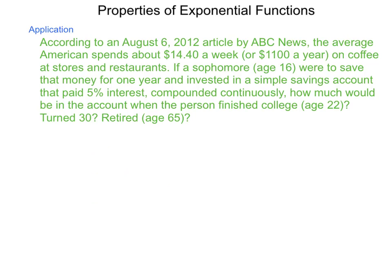If a sophomore, typical age for somebody studying Algebra 2, 16 years old, were to save the money spent on coffee for one year and invested in a simple savings account that paid 5% interest, compounded continuously, how much would be in that account when the person finished college at the age of 22, when they turned 30, typical age of settling down into career, and at the end of their career at the age of 65.